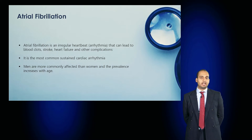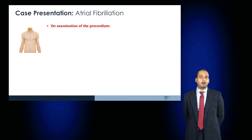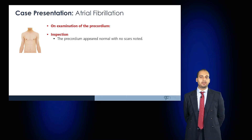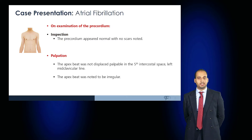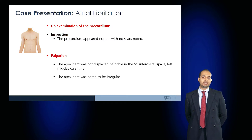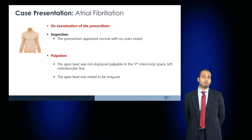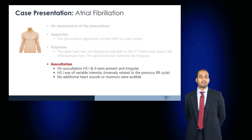Mr. John presents with palpitations. On inspection, in lone atrial fibrillation the precordium would appear normal with no scars. On palpation, the apex beat would be expected in its normal anatomical position — the fifth intercostal space, left mid-clavicular line — and the apex beat would be irregular. On auscultation, S1 and S2 would be present and heard irregularly.